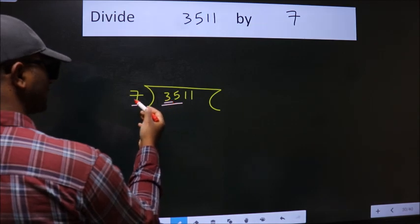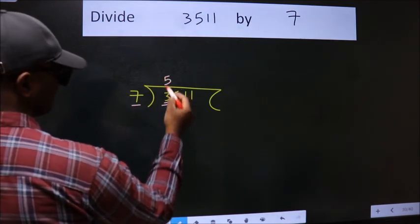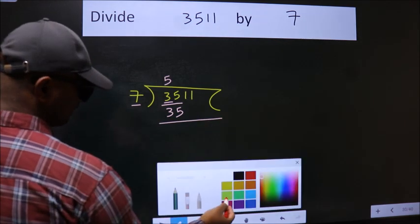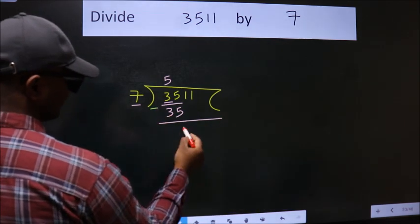When do we get 35 in the 7 table? 7 fives, 35. Now we should subtract. We get 0.